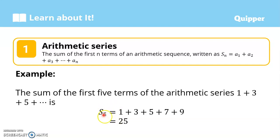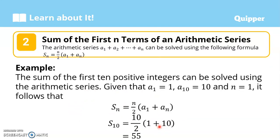Now this is okay if we are talking about the sum of just a few terms — if there are only a few terms, you can manually add them. But for example, finding the first 50 terms or first 20 terms would be laborious if we are going to add them manually. So therefore we need a general formula. We have the arithmetic series a sub 1 plus a sub 2 plus dot dot dot plus a sub n, which can be solved using the following formula. You need to memorize this — write this in your notebook.